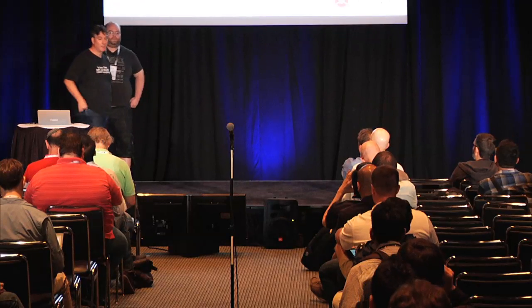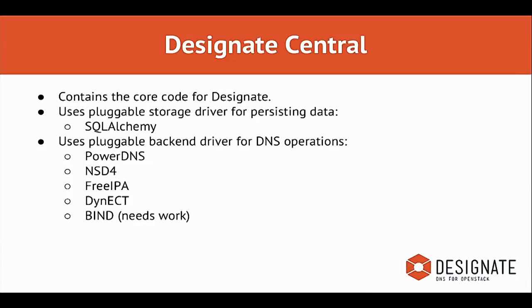Let's talk about what Designate Central does. When Designate was architected, the API was written as a front-end facade — all the actual work happens in Designate Central. It works in a plugin fashion: there's a plugin for storage using SQLAlchemy, and plugins for backend drivers including PowerDNS, NSD4, FreeIPA (Red Hat's FreeIPA), Dynect, and BIND 9 — though the BIND 9 backend needs some work.